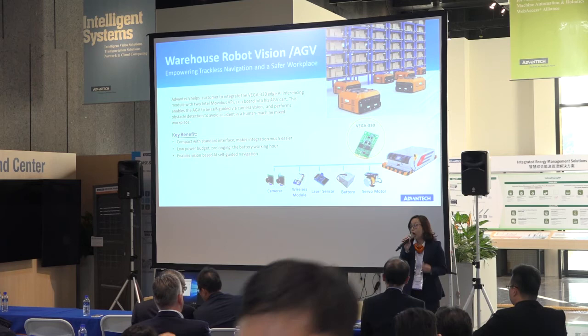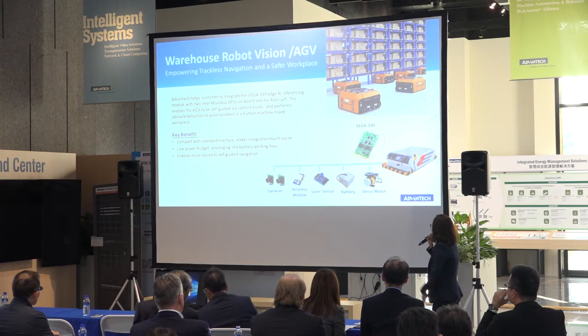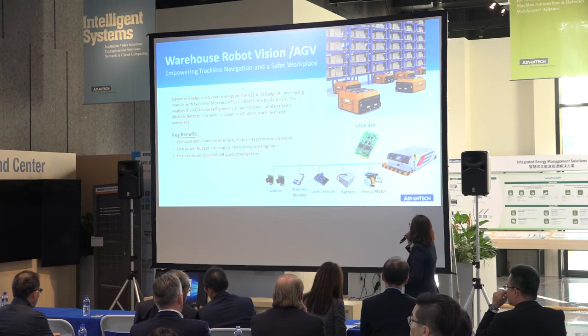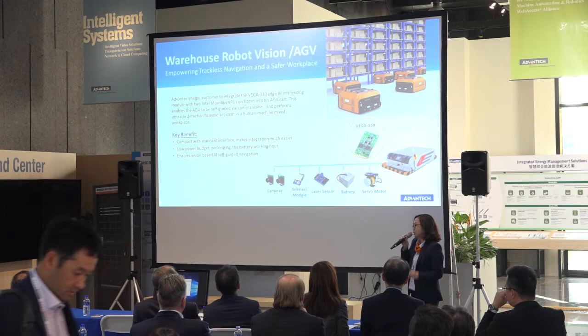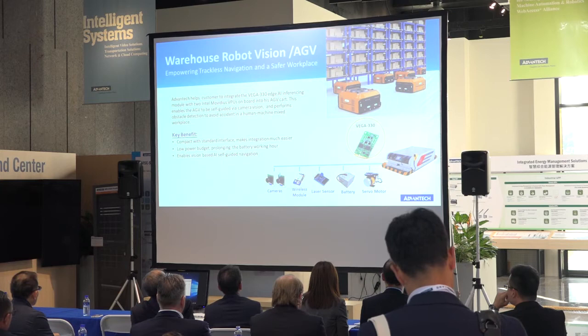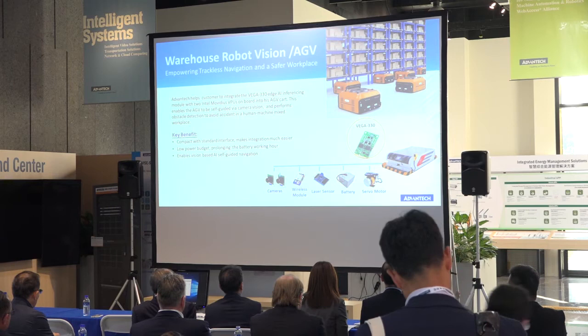In the past, AGVs mostly used a guided wire system to show where the AGV goes. But now, with an AI module, the AGV can decide where to go and take the fastest way — with a module inside. So you're not going to ask your customer to rebuild a big AGV. They already have the AGV. What we can add on to accelerate this is to put a very compact size and low power vision solution onto what they have now.